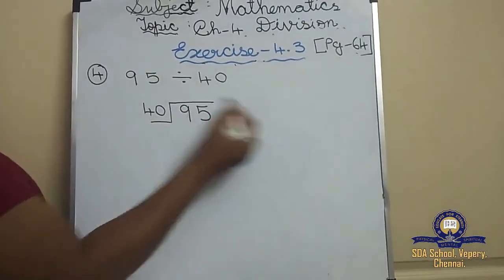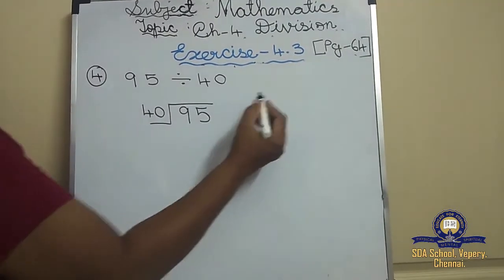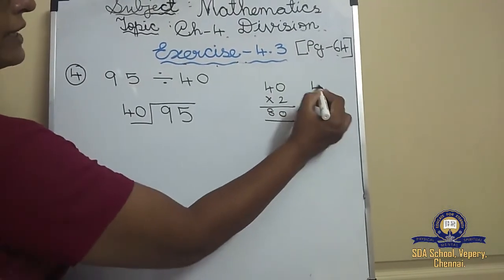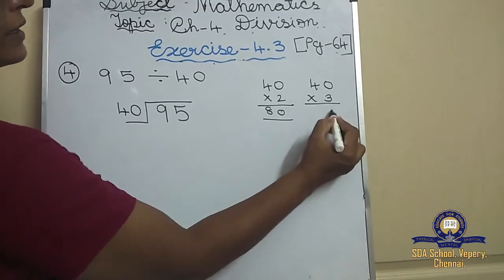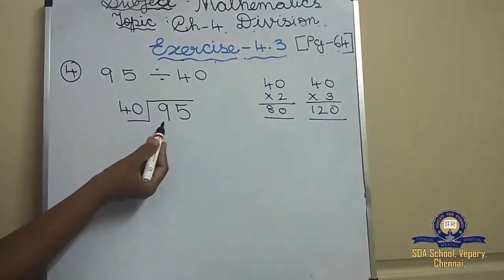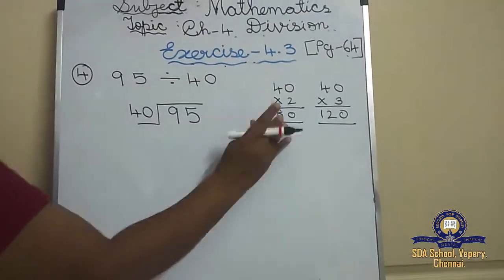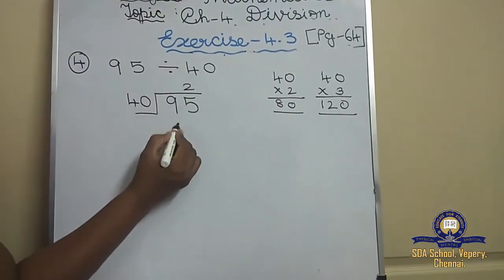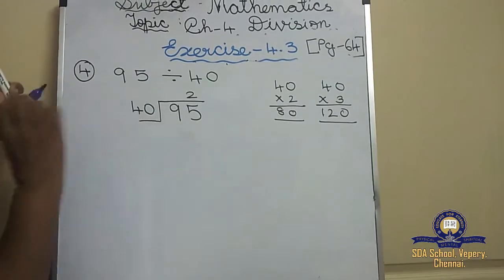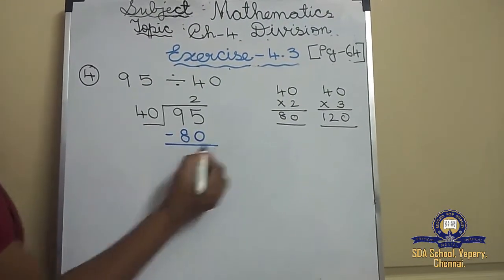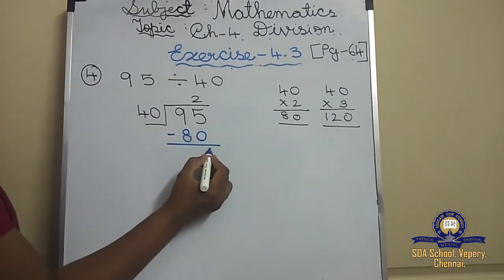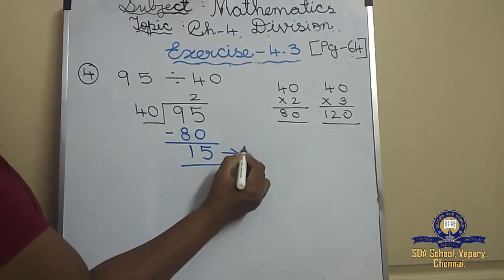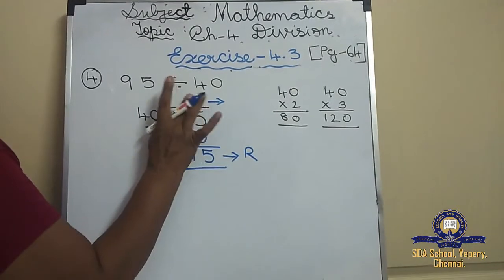Write the 40 times table: 40 ones are 40. From 2 tables — 40 twos are 80. 40 threes — 3 fours are 12, so 120. The dividend is 95. Between 80 and 120, 95 is crossed — so write the before number 80. 40 twos are 80. 95 minus 80: 5 minus 0 is 5, 9 minus 8 is 1. So the remainder is 15 and the quotient is 2.